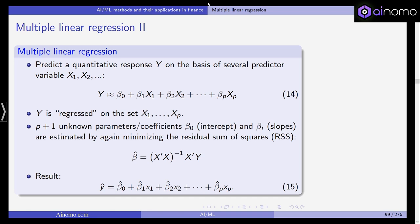Beta 1, beta 2, beta 3 up until beta p for the predictors and beta 0 for the intercept. We say that Y is regressed on the set of predictors X1, X2 and so on. Those p plus 1 unknown parameters or coefficients with beta 0 being the intercept and beta i being the slopes for the different predictors, they are estimated again by minimizing the residual sum of squares. We use OLS, ordinary least squares method, to estimate those coefficients.